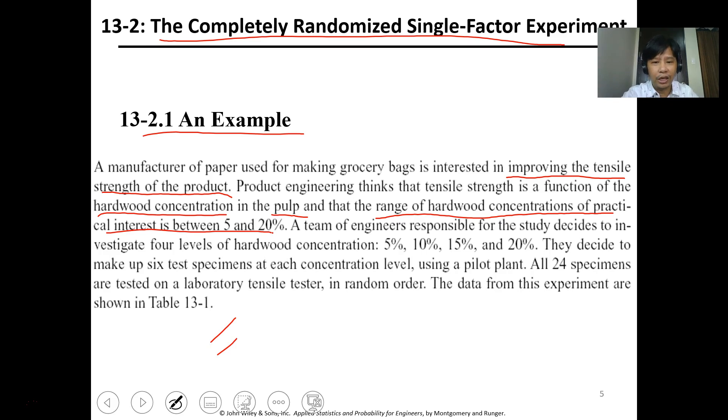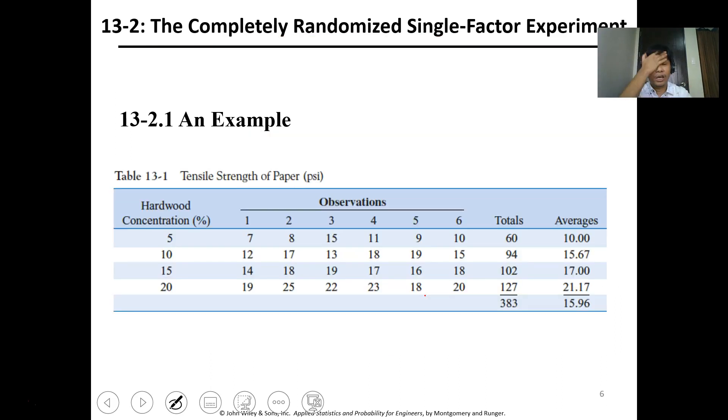Four levels of hardwood concentration are being tested: 5, 10, 15, and 20 percent respectively. They decide to make up six test specimens at each concentration level using a pilot plant. All 24 specimens are tested in a tensile tester in random order. The data from this experiment are shown in Table 13-1.